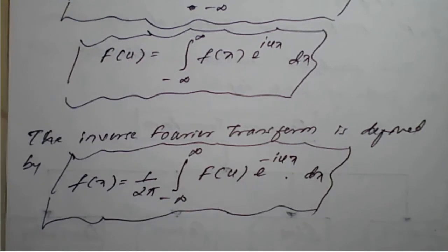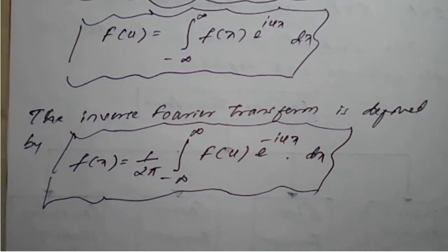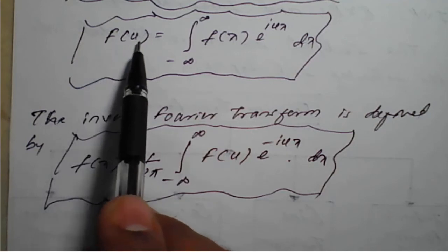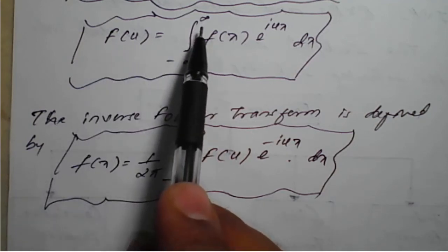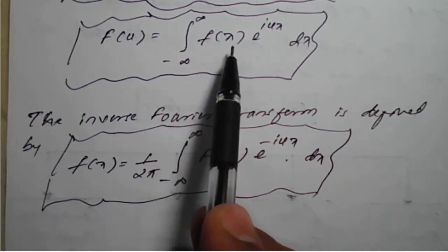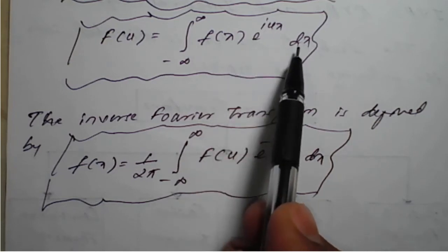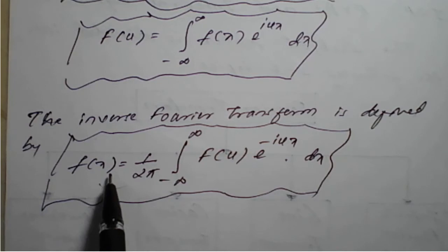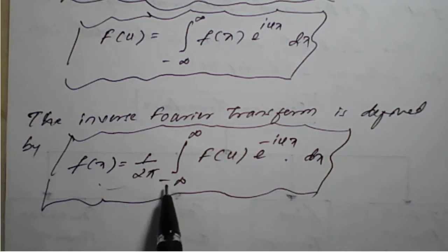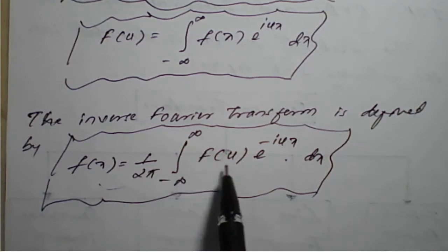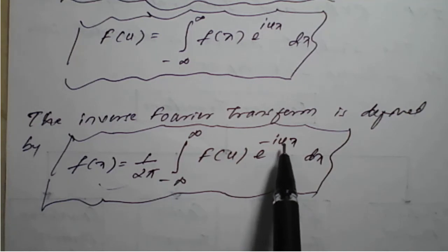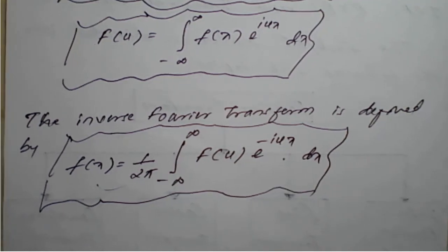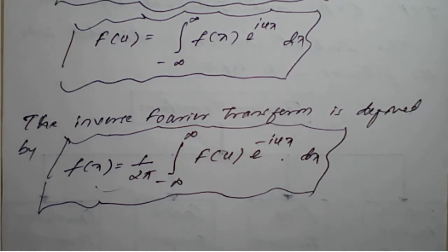Just as we have the Laplace transform and inverse Laplace transform, similarly the Fourier transform is given by F of u equal to the integration from minus infinity to plus infinity of f of x into e raised to i u x into dx, and the inverse Fourier transform is given by f of x equal to 1 upon 2 pi, integration from minus infinity to plus infinity, F of u into e raised to minus i u x into du.